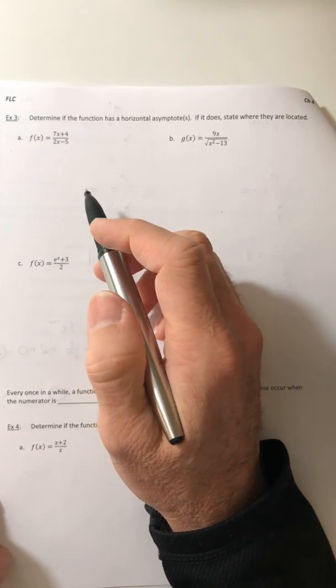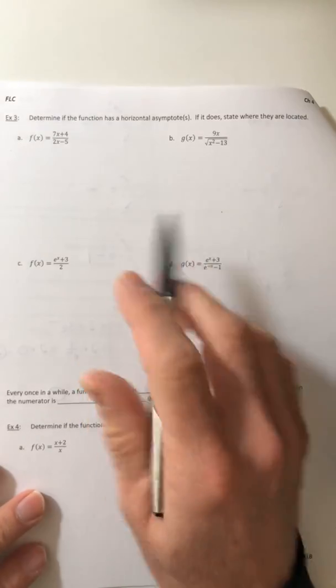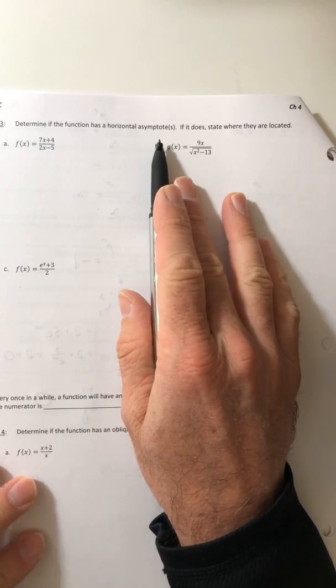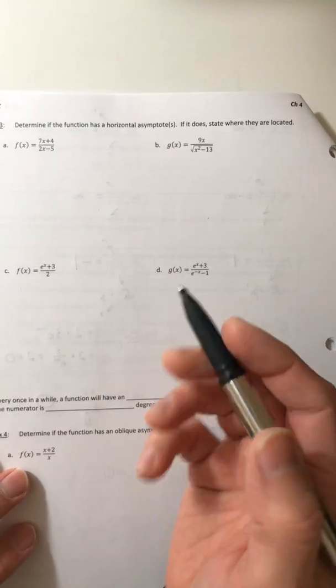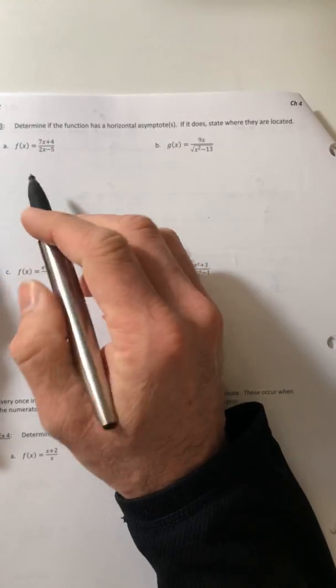Alright, welcome back. So this is the last video for section 4.5. Now we're going to put everything together and determine where these functions have a horizontal asymptote, and if they do, state where they are. They don't always have to. Chances are, since it's this section, they're probably going to have one.